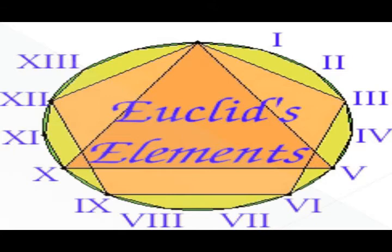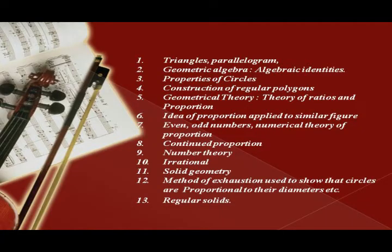Book 4 deals with the construction of regular polygons, in particular the pentagon. Book 5 developed the general theory of ratios and proportions. It formed the foundations for the geometric theory of numbers.